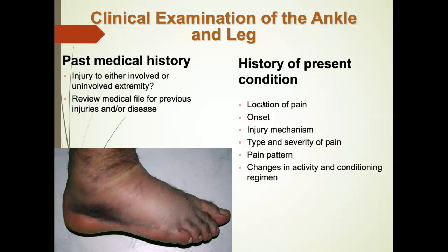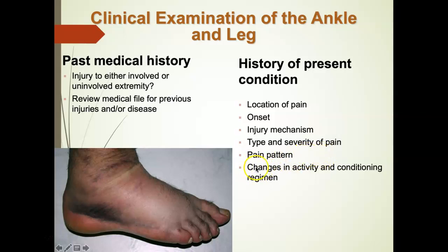In terms of clinical examination of the ankle and leg, just like with the foot, we ask specific historical questions. The number one predictor of another ankle sprain is a previous history of ankle sprain — so the first question is: have you ever injured your ankle before? For the history of present condition, we ask about location of pain, onset, mechanism of injury, type and severity of pain — which can indicate fracture versus sprain — pain pattern, and any changes in activity and conditioning regimen to identify overuse injuries.